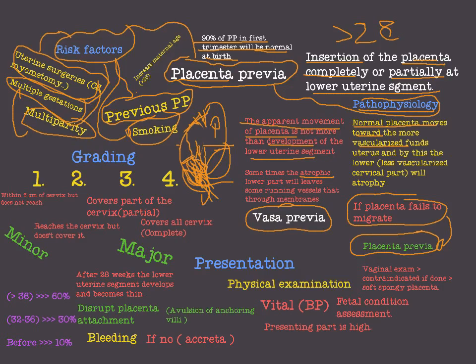Smoking is also a risk factor for placenta previa, just as it is for abruption placenta — though notably, smoking is a protective factor for preeclampsia. Increased maternal age is also a risk factor. So increased maternal age, multiparity, multiple gestation, smoking, and previous similar condition are all common risk factors between placenta previa and abruption placenta. Uterine surgeries are of special importance in placenta previa.